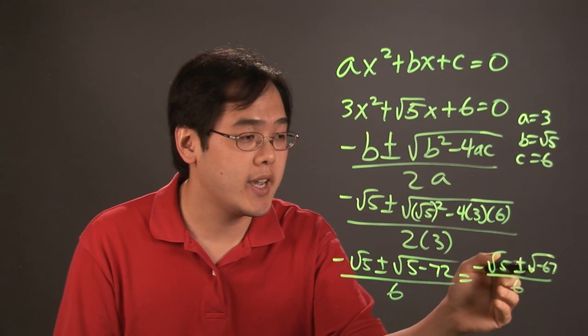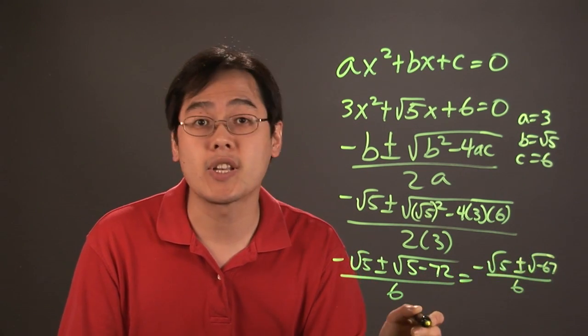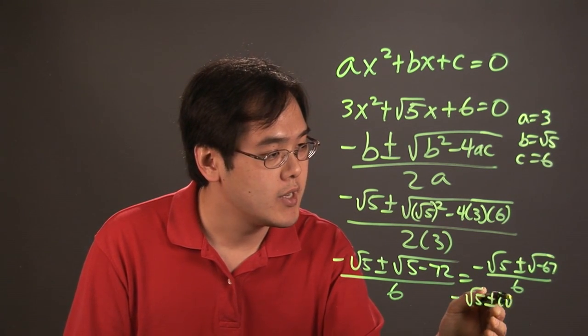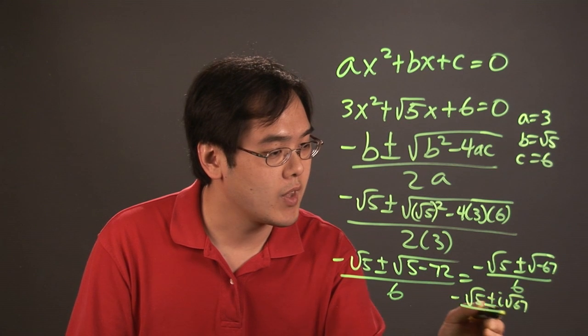Now, as you might imagine, if you have a negative number underneath the square root, it's complex, so this would be negative square root of 5 plus or minus i square root of 67 over 6.